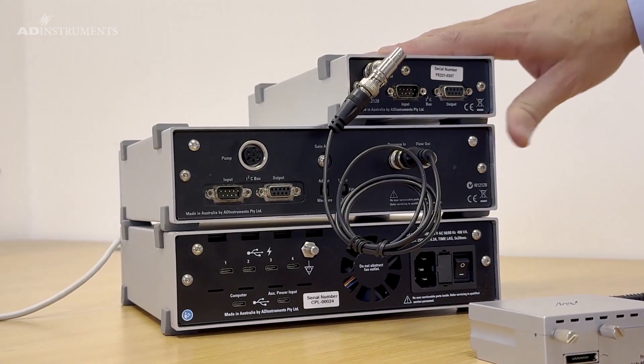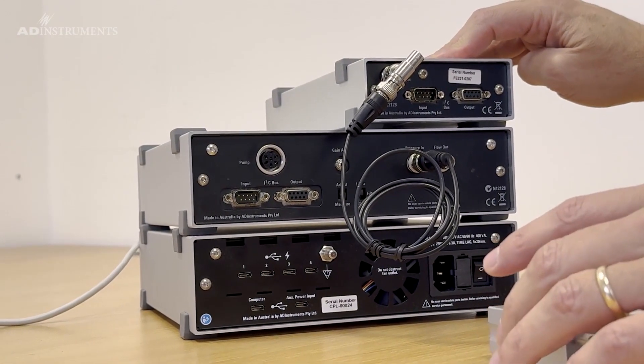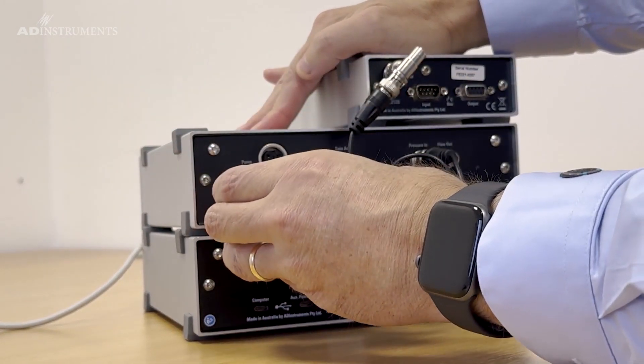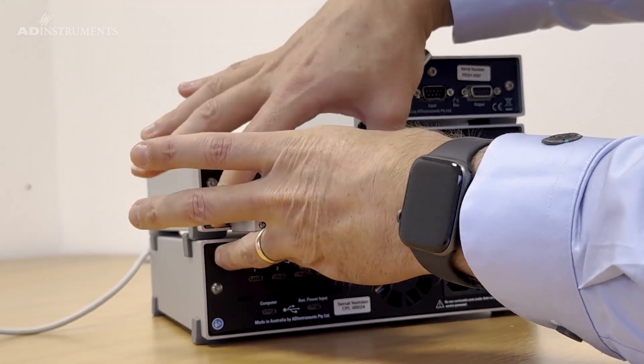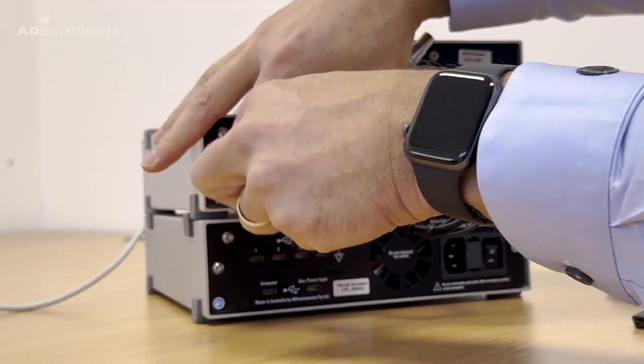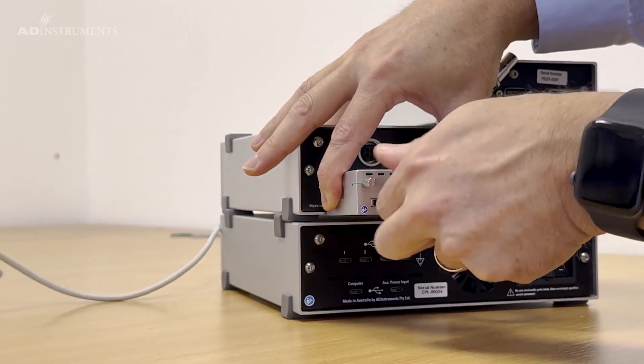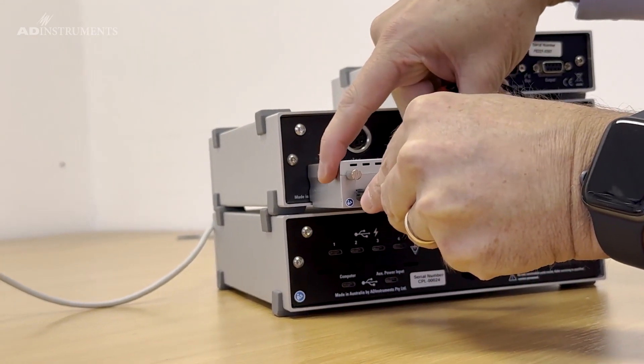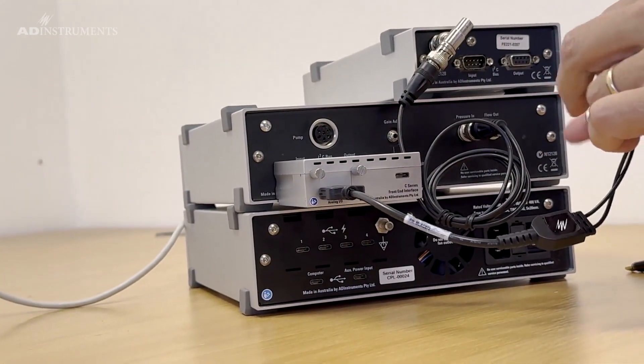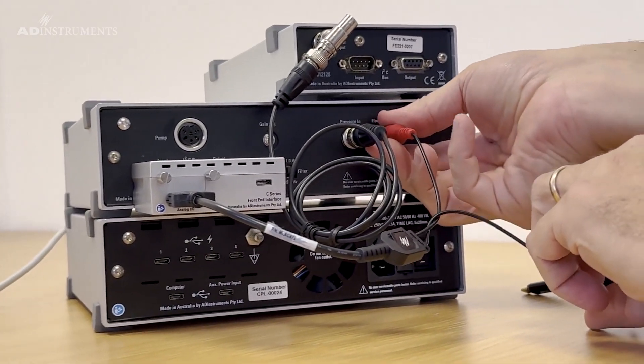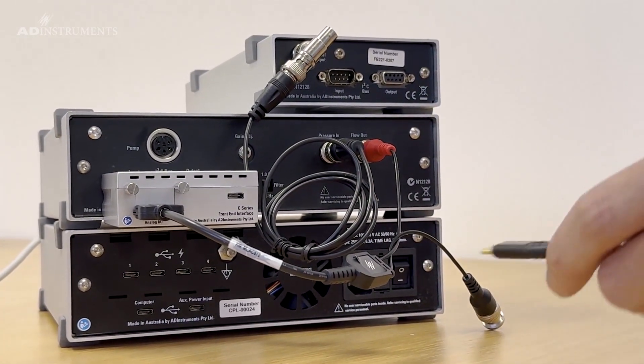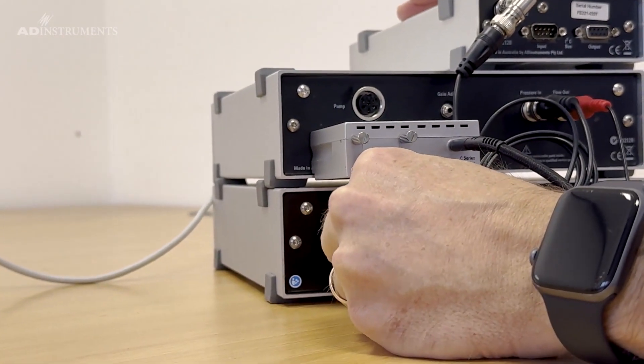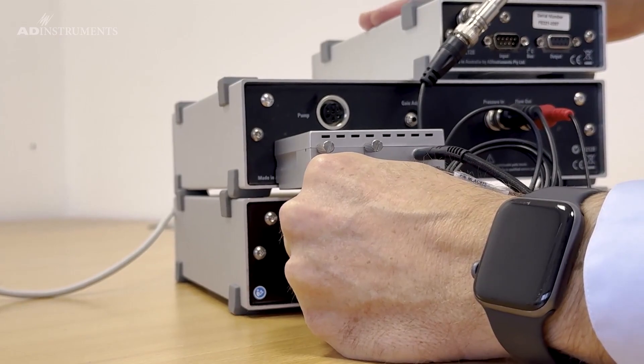For clarity I have removed the front end interface from the bridge amp. To connect the STH pump controller to the PowerLab we connect a front end interface to the STH pump controller, then connect the analog cable and the red connector to flow output on the STH pump controller, and finally connect the USB-C cable to the other input on the PowerLab.